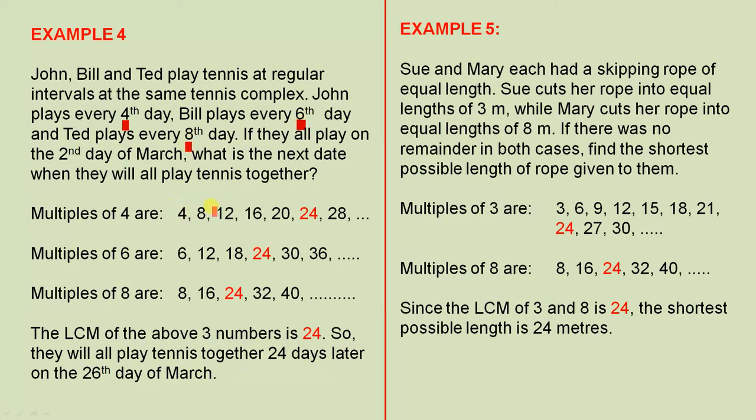The multiples of 4 are these. Here are the multiples of 6. And here are the multiples of 8. The lowest common multiple of the above three numbers is 24. So they will all play tennis together 24 days later on the 26th day of March. See how they played on the 2nd? 2 plus 24 is 26. So the next time they play tennis together will be the 26th day of March.